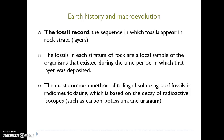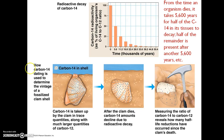Now I'm going to move on to Earth history and macroevolution. The fossil record is the sequence in which fossils appear in rock strata or layers, and the fossils in each stratum are a local sample of the organisms that existed during the time period in which that layer was deposited. The most common method for determining the absolute or exact ages of fossils is radiometric dating, which is based on the decay of radioactive isotopes such as carbon, potassium, and uranium. I'll go ahead and pause here and finish up in the next recording.